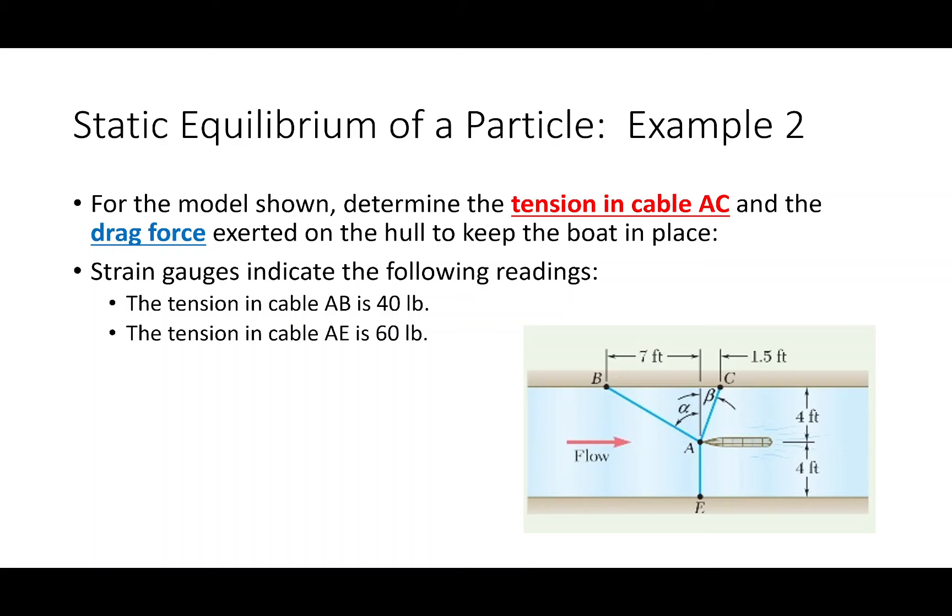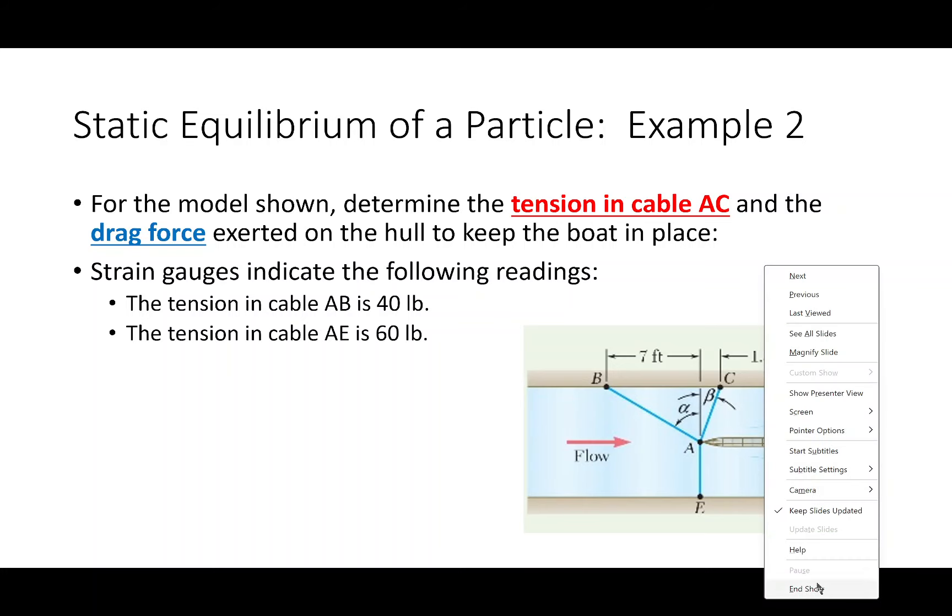There's a drag force being applied to the boat because of flow in the canal, and a series of cables keeping the boat in equilibrium. I know the tensile force in cable AB and cable AC. Based on that, I want to find the tensile force in the remaining cable and the drag force. Maybe we can use the readings on those two cables to figure out how much drag is being exerted on the boat. Our free body diagram will be centered on point A, where all forces flow through.